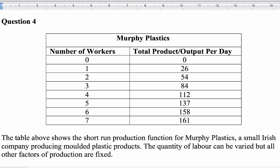In this video we're going to look at a typical exam question on a short-run production function. We have one column with the number of workers and a second column showing total product or output per day. For example, with no workers there's no output, with one worker that worker produces 26 units of output, and two workers together produce a combined output of 54 units. We're going to look at a couple of exam-type questions that come with a table like this.